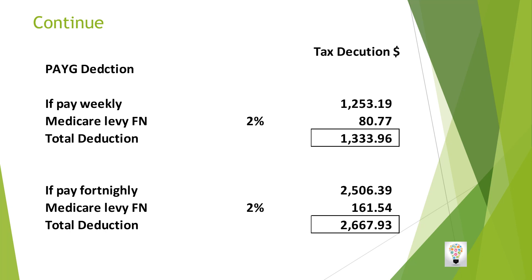You also need to pay the Medicare levy, which is 2 percent of your gross taxable salary. Your gross salary is your hourly rate multiplied by the number of hours you work weekly or fortnightly. Multiply that by 2 percent to get your Medicare levy. Adding the Medicare levy to the tax amount gives your total deduction per week. Most organisations pay fortnightly; the full fortnightly tax deduction is $2,506 plus 2 percent Medicare levy, totalling approximately $2,667.